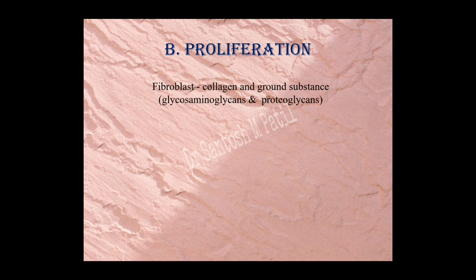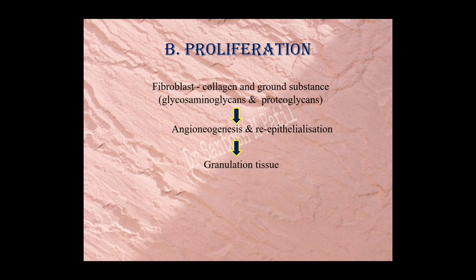Proliferation is mainly by fibroblasts, which are responsible for deposition of collagen and ground substance in the form of glycosaminoglycans and proteoglycans. The collagen responsible for forming the scaffolding or granulation tissue over the injured area is mainly collagen type 1 and type 3. Once the collagen has been deposited, new blood vessels form — neoangiogenesis — and re-epithelization also starts. This collagen intermingled with neoangiogenesis is what we term granulation tissue, which mainly consists of type 3 collagen.